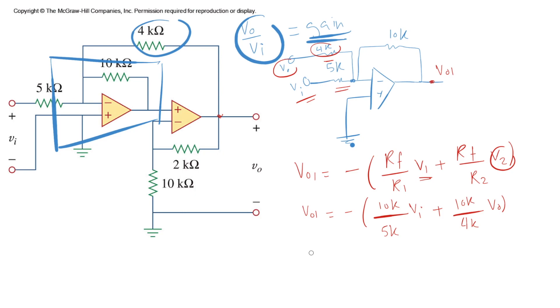So Vout1 is minus, this is 2, right? Vout1 is minus 2Vi and this is 2.5 Vout. Simplify further. Vout1 is minus 2Vi minus, not plus, minus, right? Because minus is multiplied by both, so minus 2.5 Vout.